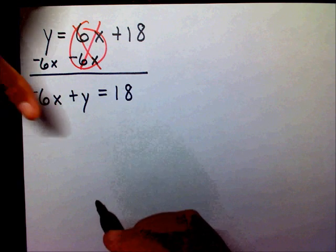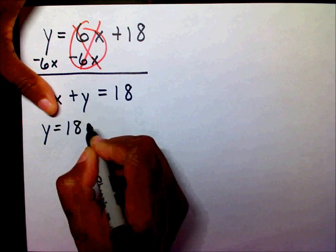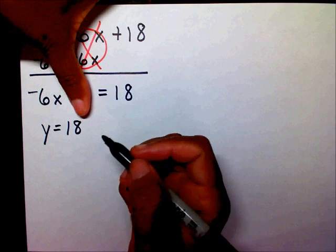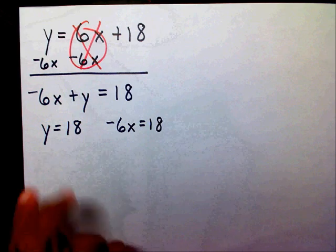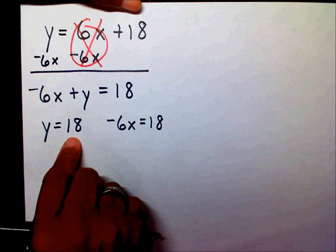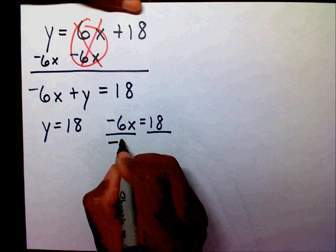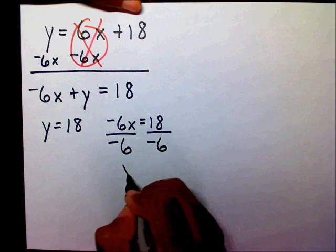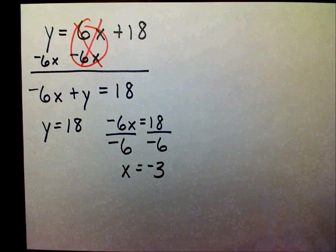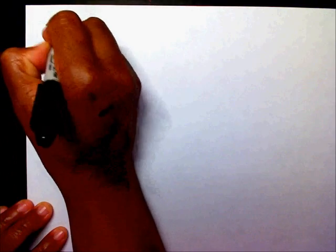Now I can cover up my first term. That leaves me with y equals 18. And if I cover up my second term, that's going to leave me with negative 6x equals 18. This equation is already solved — y equals 18. But I need to isolate x, so I'm going to divide both sides by negative 6, and that's going to leave me with x equals negative 3. So my y-intercept is 18 and my x-intercept is negative 3.